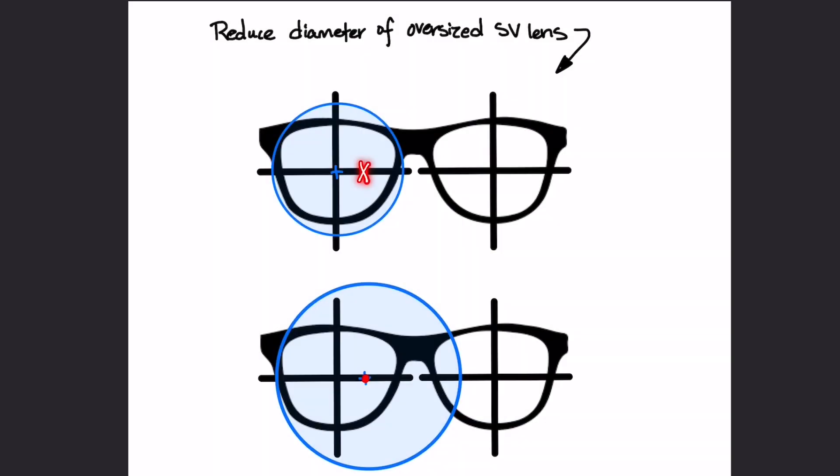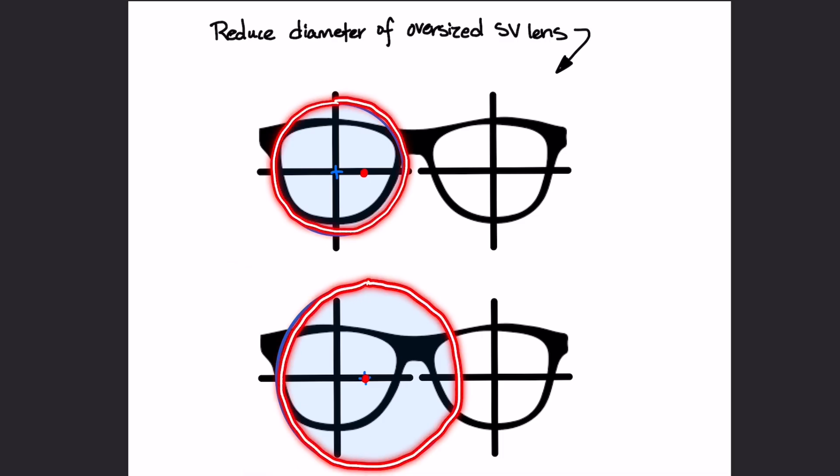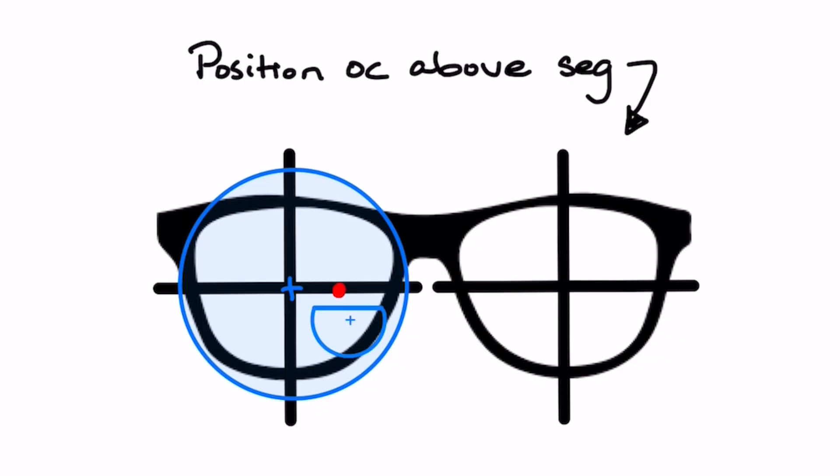Prism for decentration or decentration on the blank is commonly used on oversized single-vision lenses to help ensure lens cutout and it's commonly used on segmented lenses to position the major reference point at a specific point above the segment.